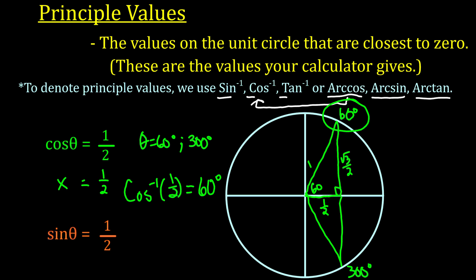It's also true at 300 degrees, since the x-value there is also 1/2. However, 300 is 240 degrees further away from zero than 60 — you reach 60 first when rotating, and then have to go another 240 degrees to reach 300. So even though 300 might look close on the circle, the principal value is 60.